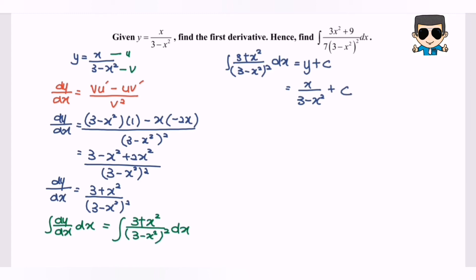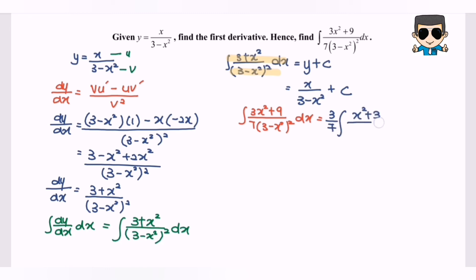Now for the integral of (3x² + 9) / 7(3 - x²)² with respect to x, we need to modify the expression to match our known result. Factoring the numerator: (3x² + 9) = 3(x² + 3), so we get 3(x² + 3) / 7(3 - x²)², which is similar in form to (x² + 3) / (3 - x²)².